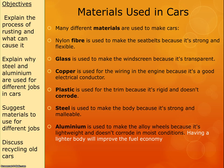Nylon is used in seatbelts because it's strong and flexible. Glass is used in the windscreen because it's transparent. Copper is used in the wiring because it's a good electrical conductor. Plastic is used for the trim because it's rigid, keeps its shape, and doesn't corrode. Steel is used for the body because it's strong and malleable. Aluminium is often used to make the wheels because it's lightweight and doesn't corrode.